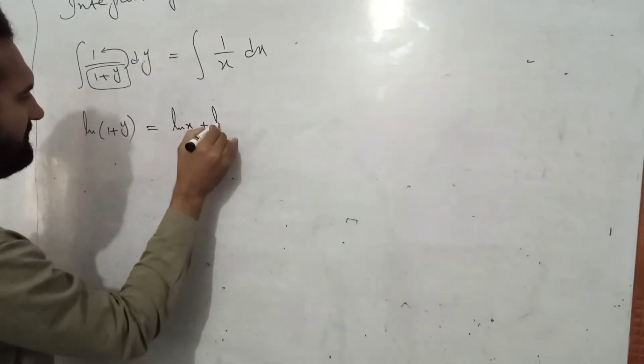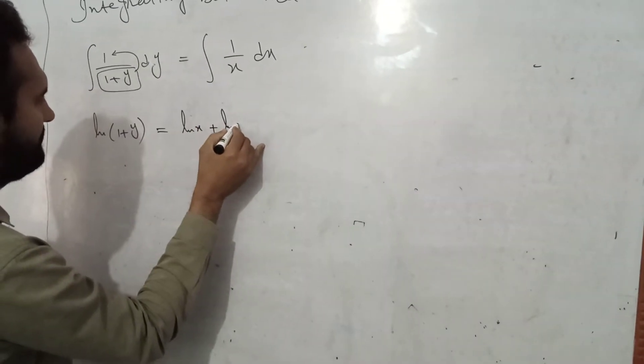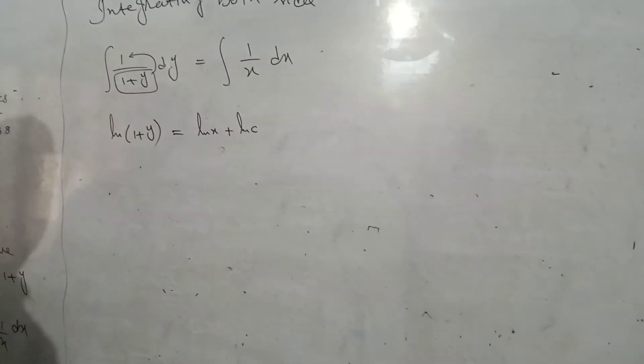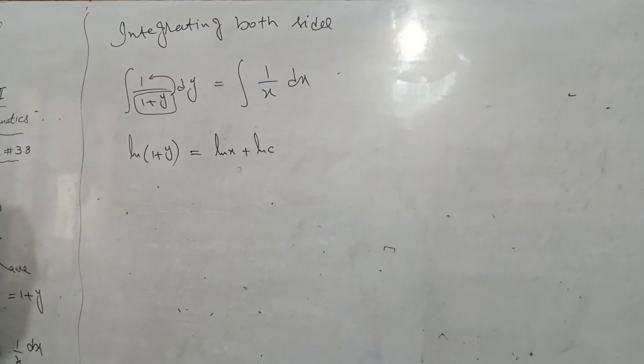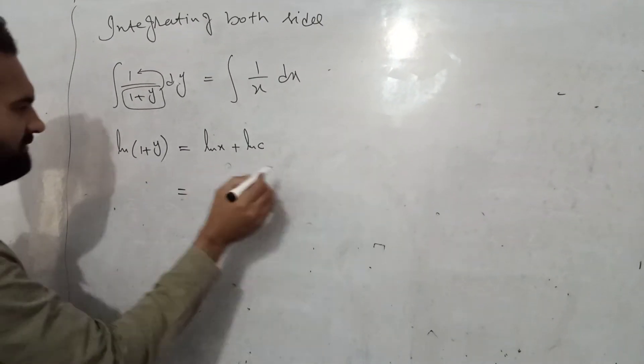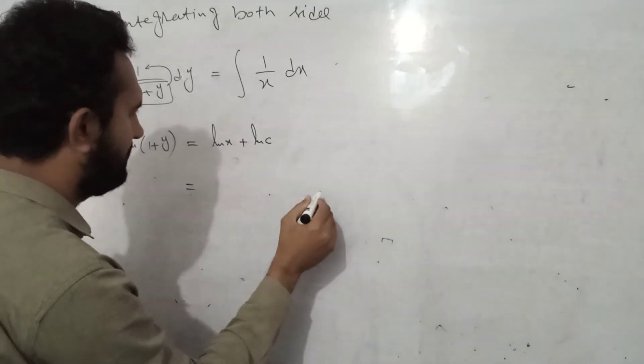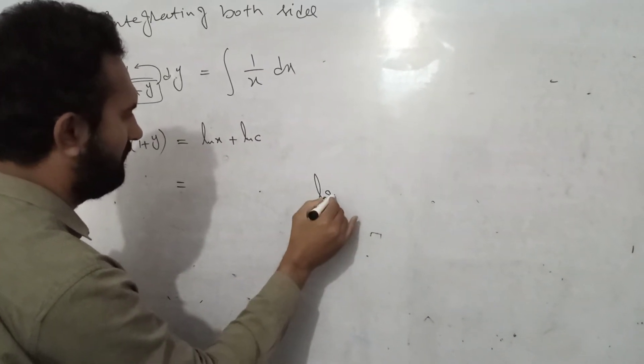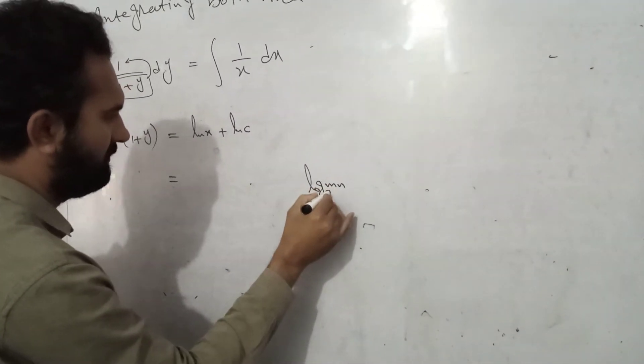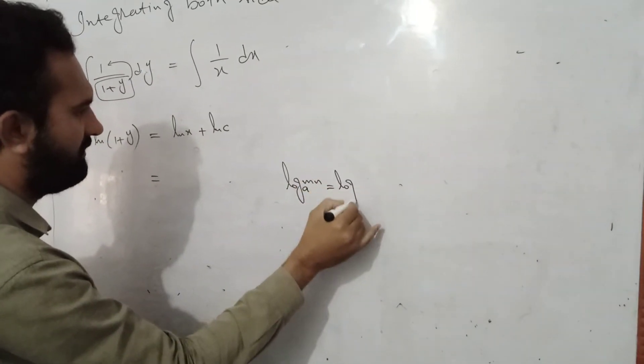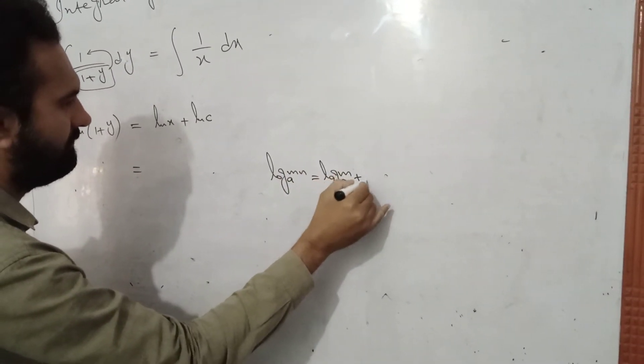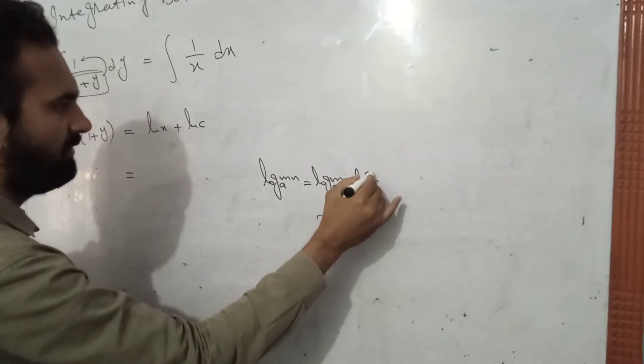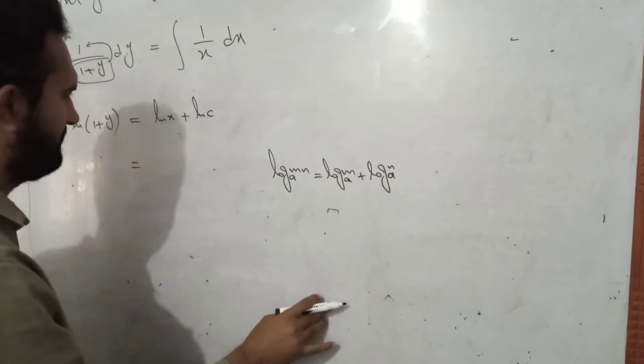The first law, I call, log of m to the base A equal to log of m to the base A, log of m to the base A, log of n to the base A.